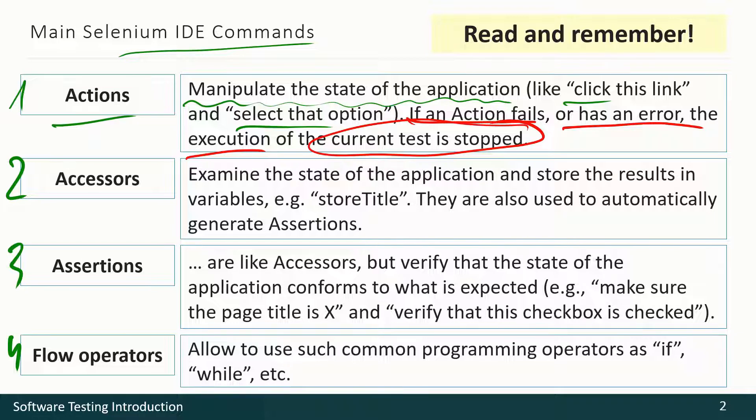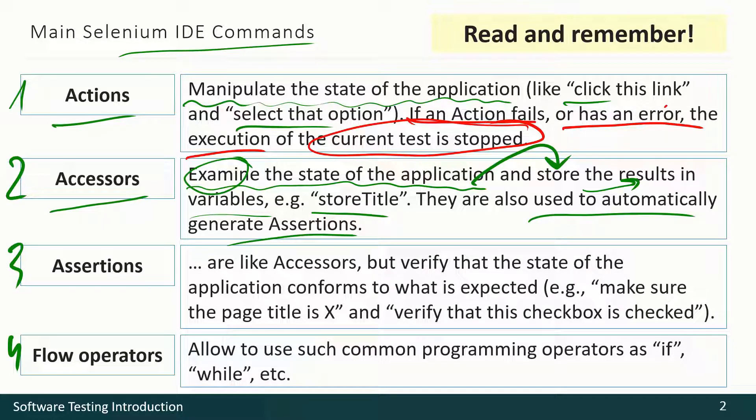Accessors allow us to access some state of the application. Not only examine it, but really store the result in some variable for future usage. And accessors also automatically generate assertions. So if an accessor fails, the test fails too.